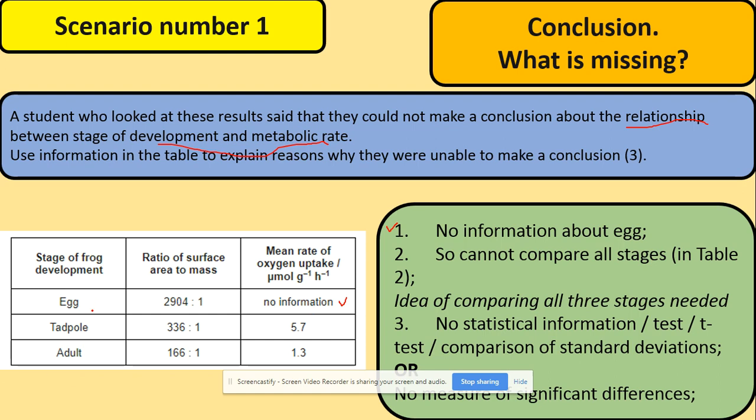We cannot compare all those three stages, and because we don't have that, we cannot do a statistical test. Normally in terms of the conclusions about some results, we will be looking at the statistics at the standard deviation. In this situation, if we had all information, we're looking at the mean value. That's why we could use a test.